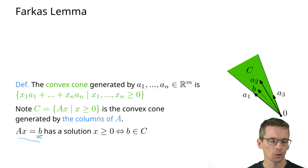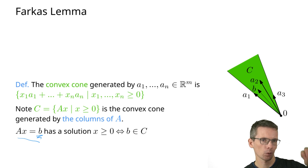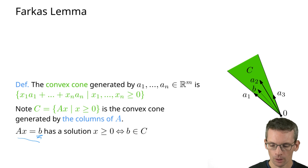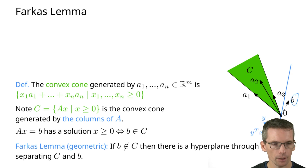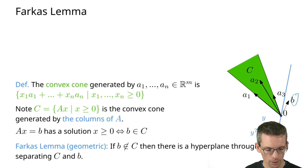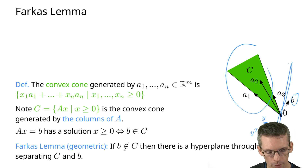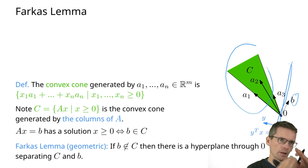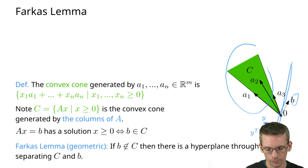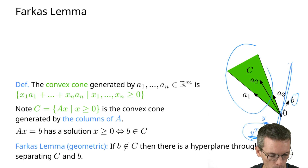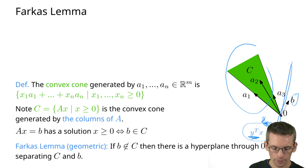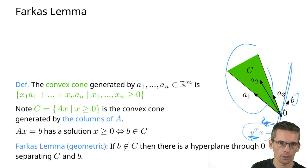Farkas Lemma gives us a characterization of the situation if b is not in the cone. The geometric interpretation is that if b is not in the cone, then I can actually find a separating hyperplane which separates the cone from b, in the sense that the cone is on one side of the hyperplane, and b is on the other side. A hyperplane has this normal vector y transposed. So on the hyperplane, y transposed x equals 0, and for anything in C, y transposed x is greater than or equal to 0, and for b it's smaller. And that's exactly Farkas Lemma.